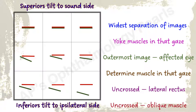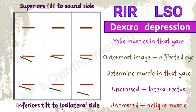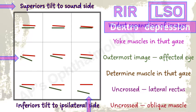Next. Maximum separation of images is in dextro depression. The yoke muscles acting in dextro depression are the right inferior rectus and the left superior oblique. Green is the outermost image, so the left eye is involved — there is a left superior oblique palsy. This is an uncrossed diplopia, so the oblique checks out. Tilt is towards the sound right side, so the superior checks out.